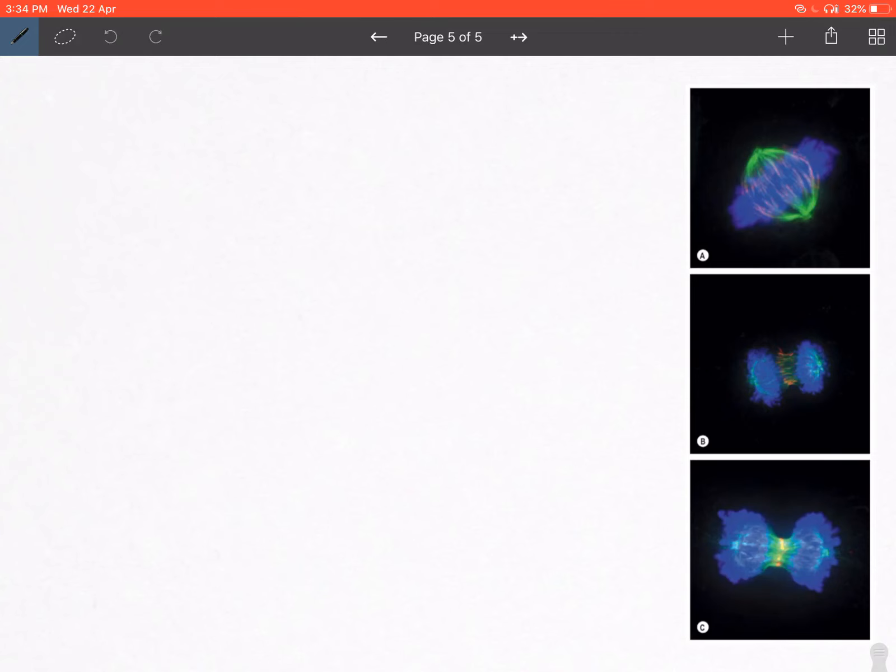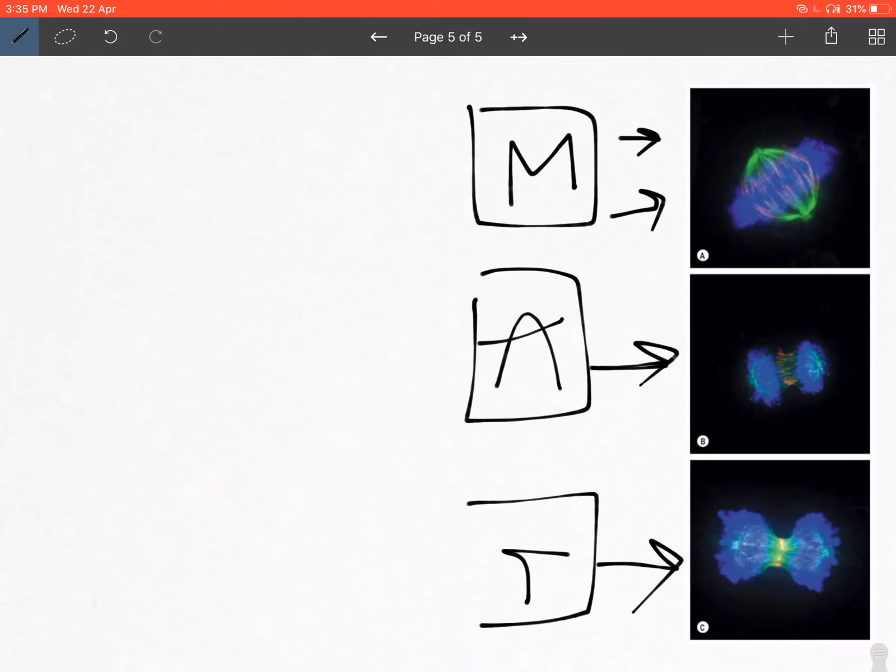This is a cool immunofluorescence image from the 40th edition of Gray's. This is showing the mitotic spindle—this is essentially the metaphase. What you see here is the anaphase. Now what you see here is the cytoplasmic splitting that is happening, so that is telophase.